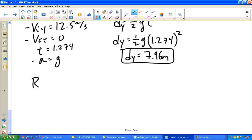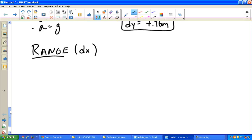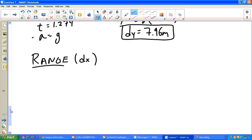Okay? Now, the final thing I'm going to calculate today is the range. And again, that's the horizontal, so that's dx. And remember that because the ball is moving at a constant velocity in the x direction, the only equation we'll ever use is vx equals dx divided by t.